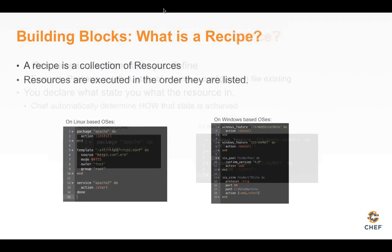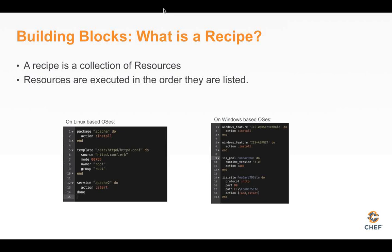The cool thing about resources is that once you're familiar with the 150 or so built-in resources, you can actually add your own custom resources that tie into your specific software applications or hardware APIs — these are all things you can extend Chef into. Once you have a bunch of resources, you put them all in a recipe. A recipe, just like in cooking, is a set of directions that you execute on a machine.